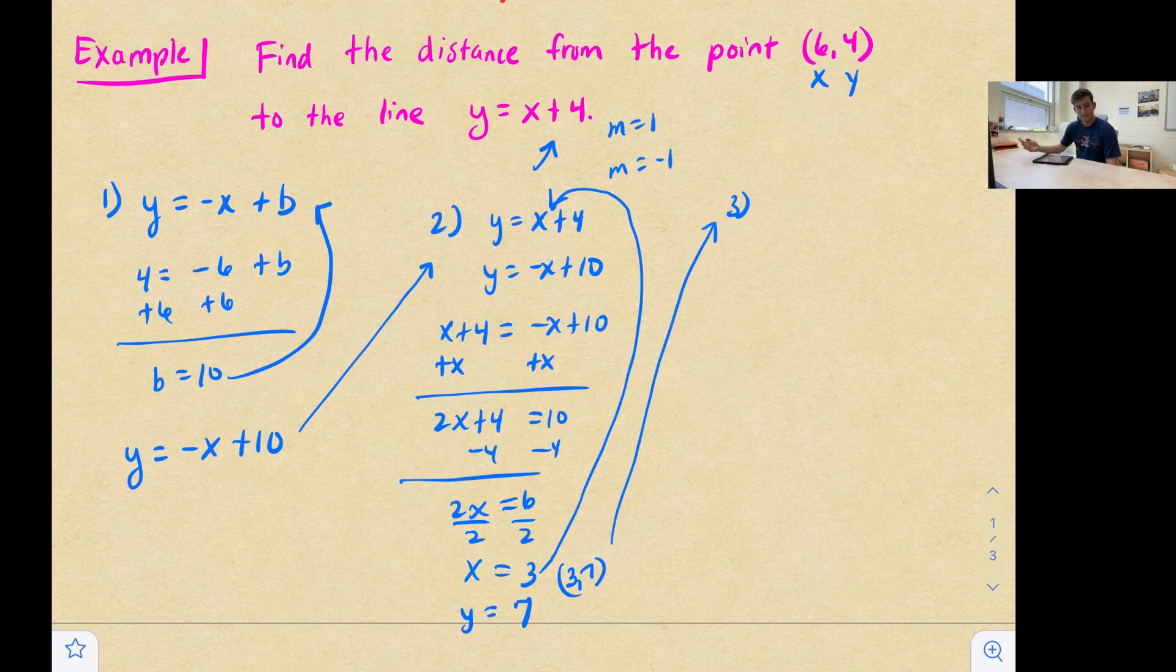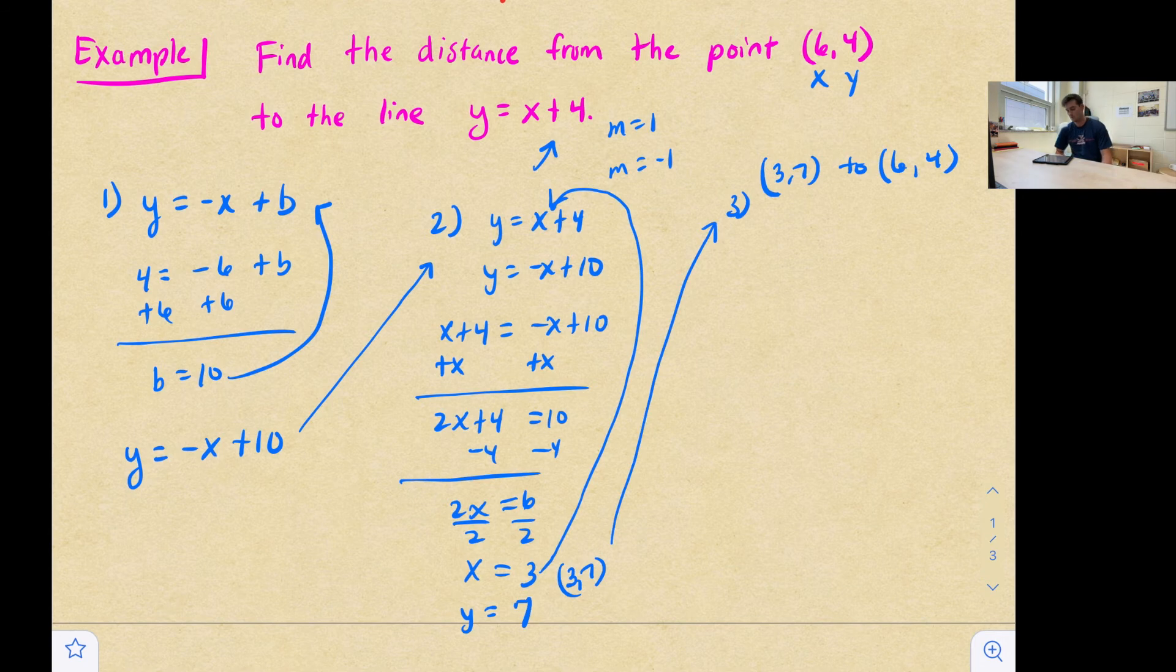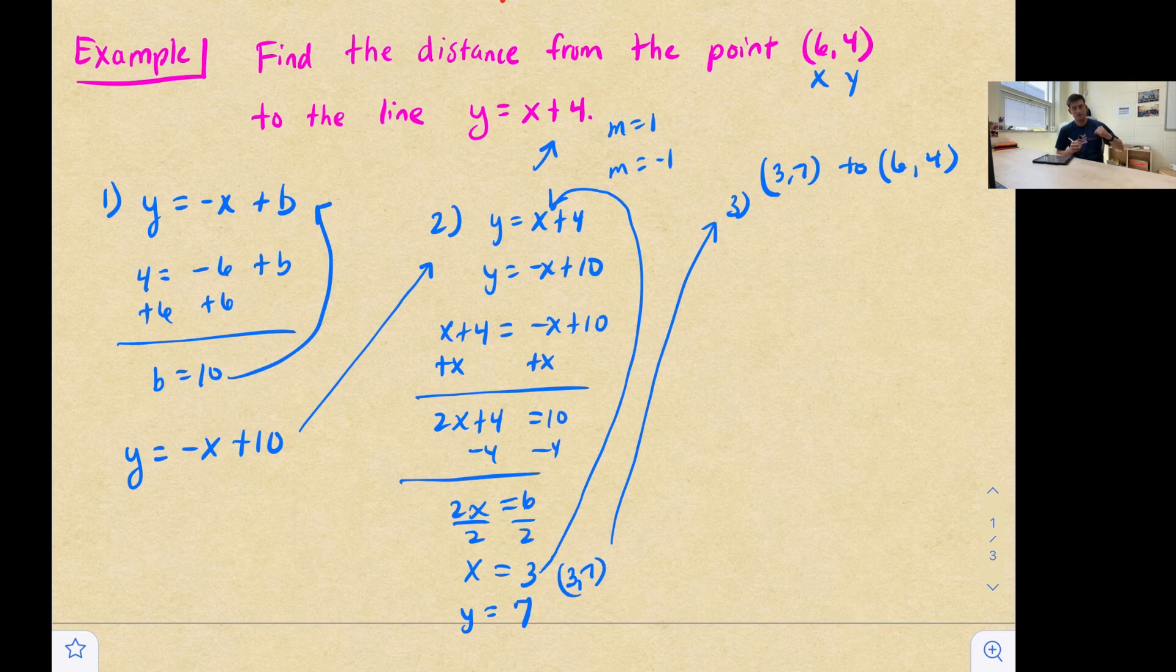So now step three, we're going to find the distance now from three seven to six comma four. Okay, so three comma seven is our point that we found that is on both of these lines. And six four is the point that we're trying to find the distance from.